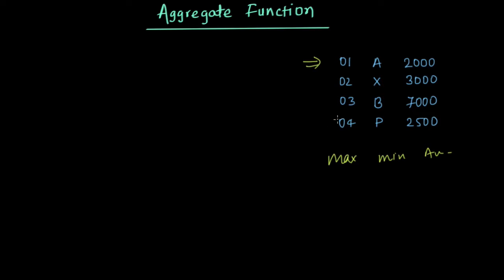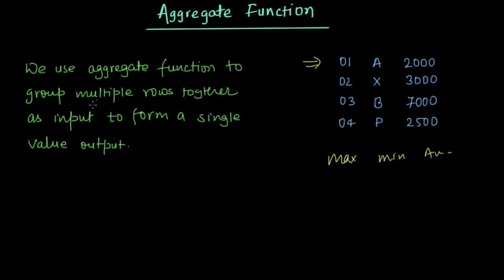Then there comes the use of aggregate function. So we use aggregate function to group multiple rows together as input to form a single value output. So this is a group of records and we take it as input and we want to find a single value output that is what is maximum.